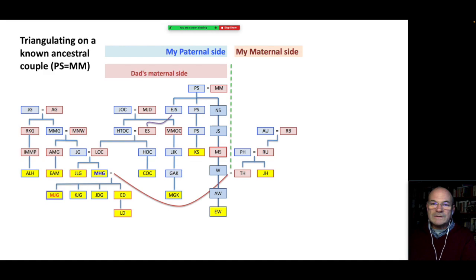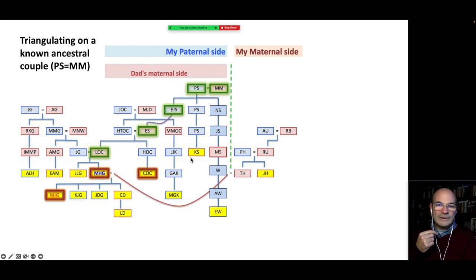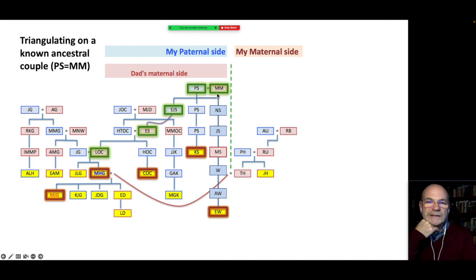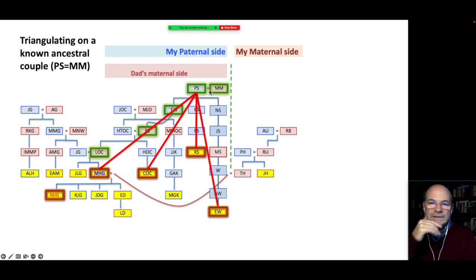Some years ago I noticed that my father and several of his cousins all descended from Patrick Spirin and Mary Morgan. I got to thinking: how can I use this to try and break through my brick wall on my Spirin side of the family? I wasn't particularly interested in the Morgans at that point, but I was interested in the Spirins. Any matches that any of these four people share in common — there's a good chance it came through either Patrick Spirin or Mary Morgan, because that's the common ancestor these four people share.